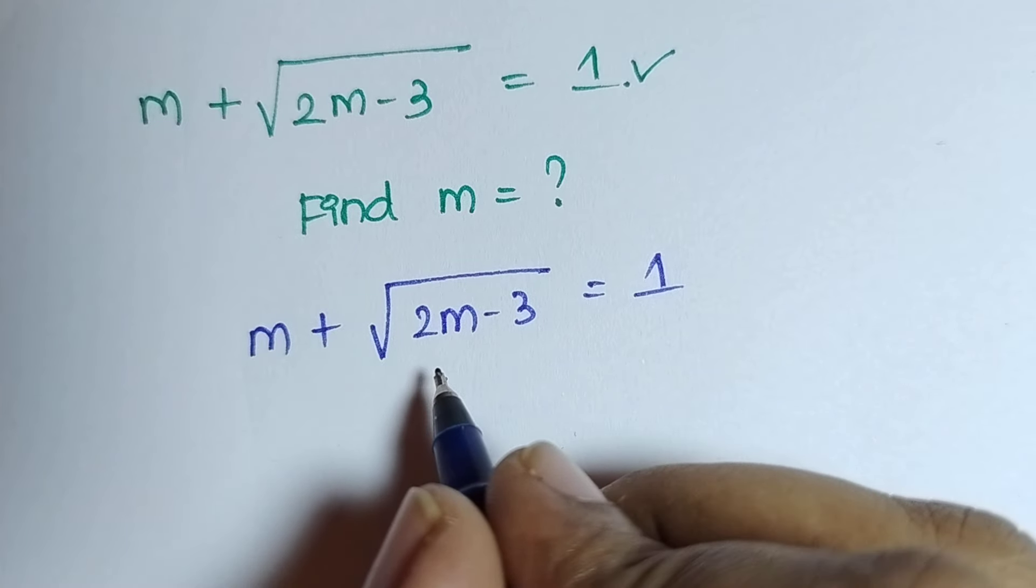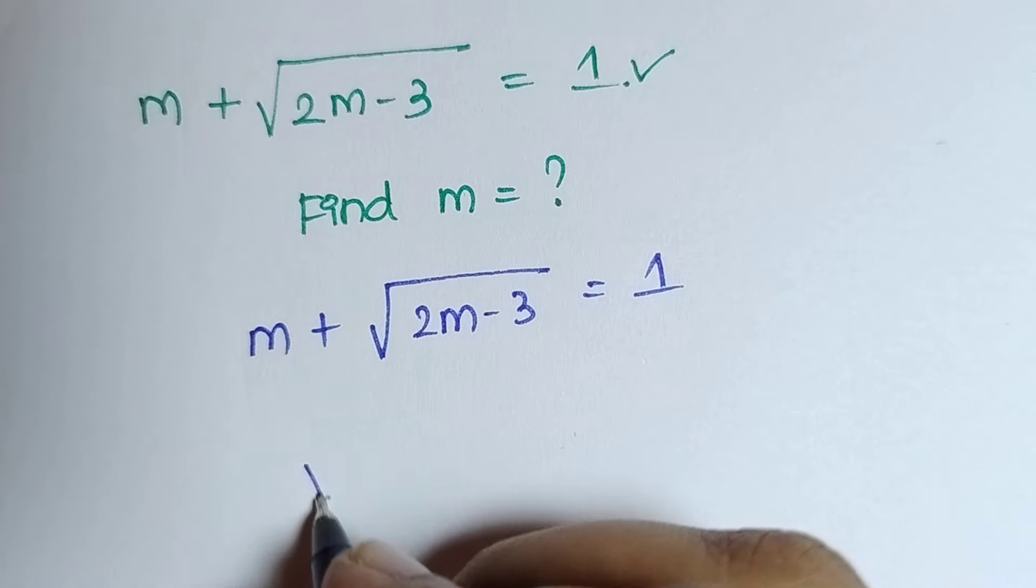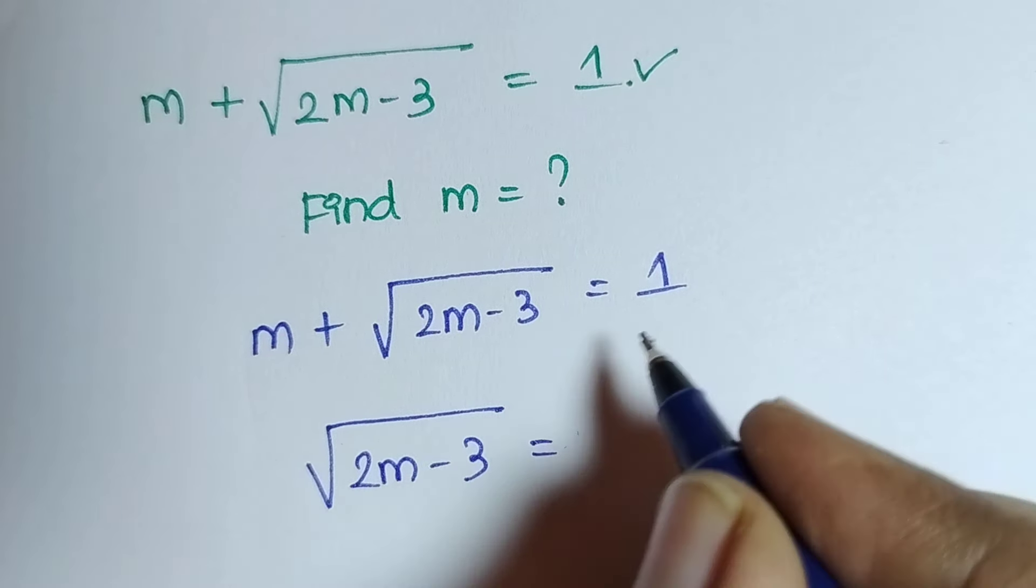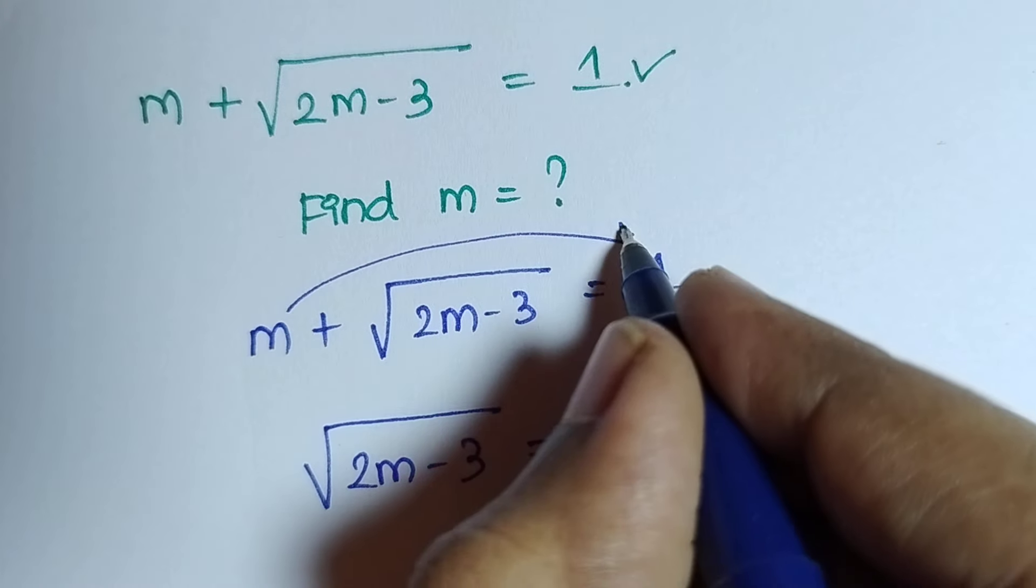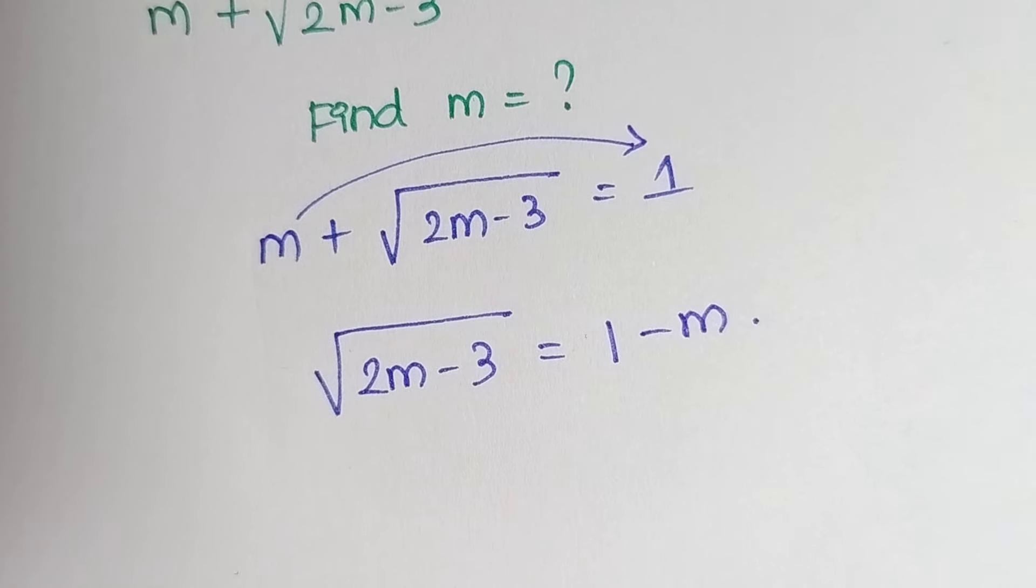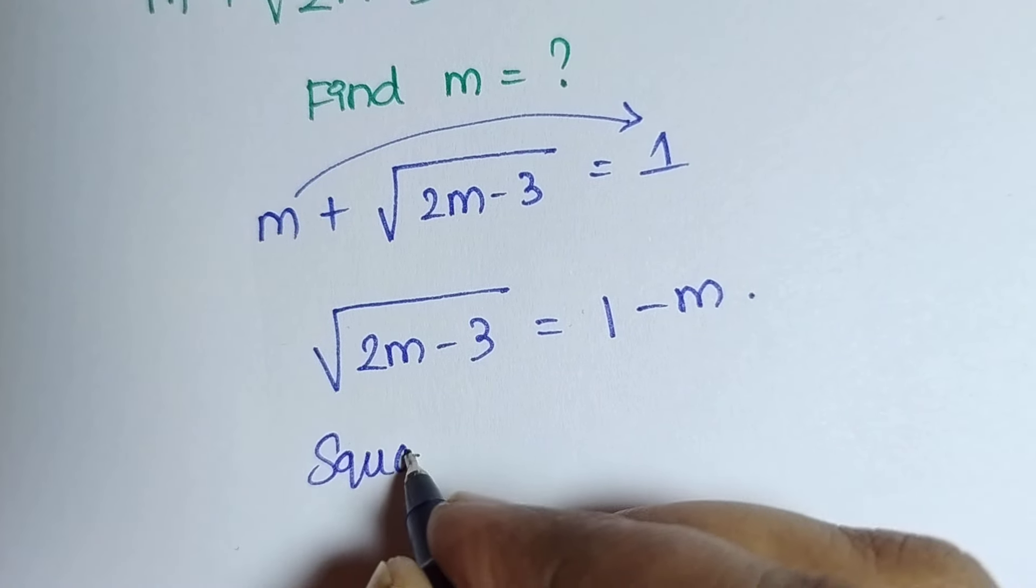I am going to keep this root in one side and other terms in the right side. I am going to keep this root term in left side and shift this m towards right side. If you want to remove the root, what we have to do? We need to take square on both sides.